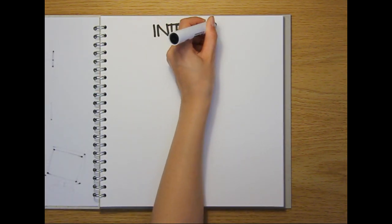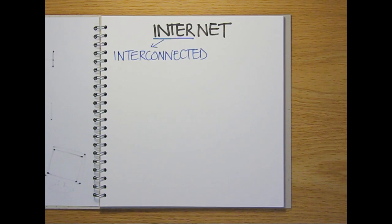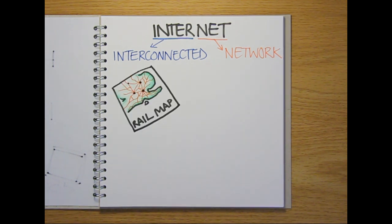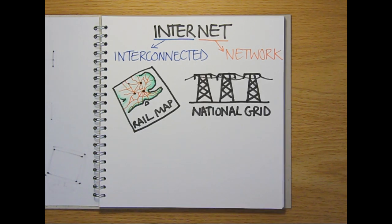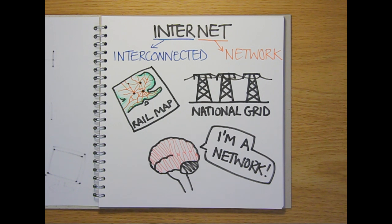The term internet is a shortened form of the two words interconnected and network. Networks are things that are connected together. They include railway and road networks, electricity networks like the national grid, and the networks of nerve cells found in your brain.